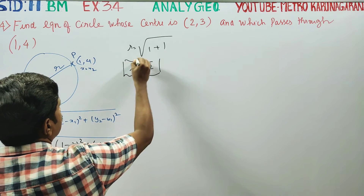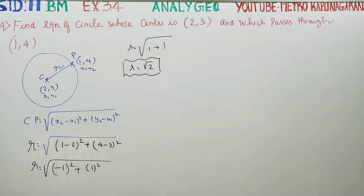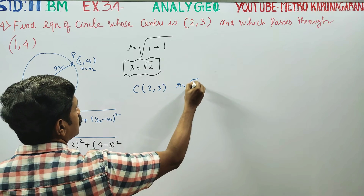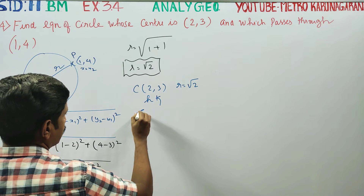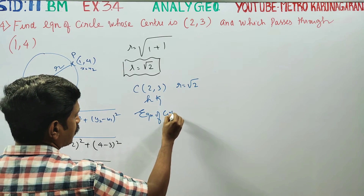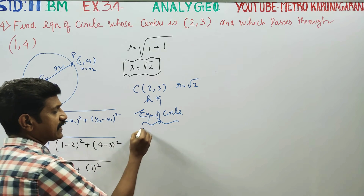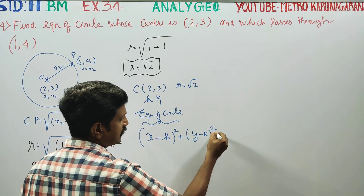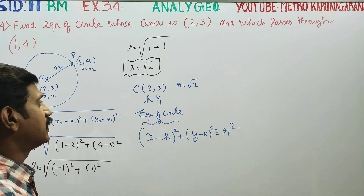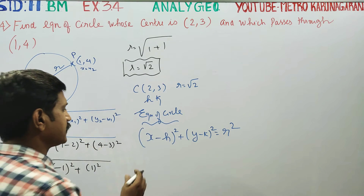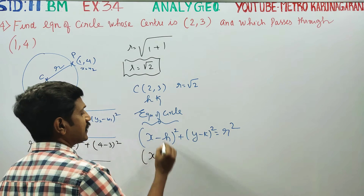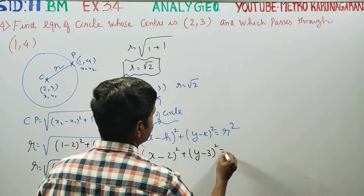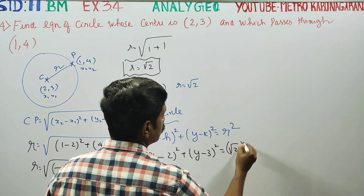This is our radius. After finding the radius, our center is ready. The center is (2,3) and the radius is √2. Center equals (h, k). The equation of the circle formula is: (x minus h) all squared plus (y minus k) all squared equals r squared. Substituting: (x minus 2) squared plus (y minus 3) squared equals (√2) squared.